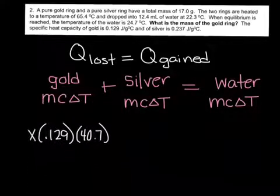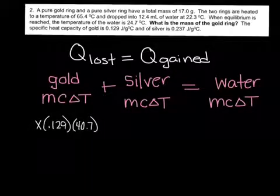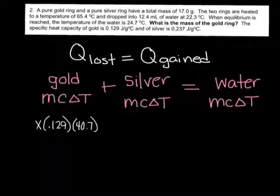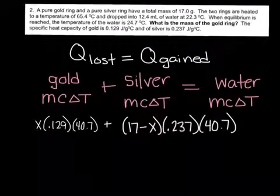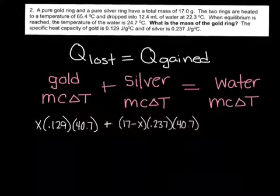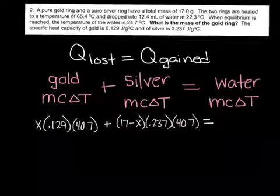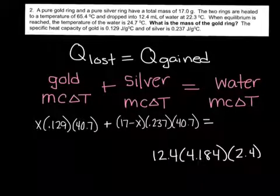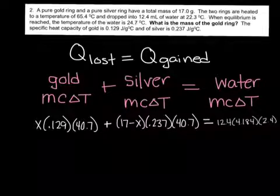Plugging my values in for mcΔT for gold gives me x(0.129)(40.7). I'm going to add that to the information for silver, which is (17-x)(0.237)(40.7). And that should equal the information that I have for water, which is 12.4(4.184)(2.4).